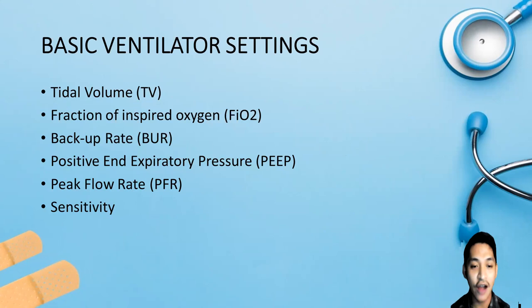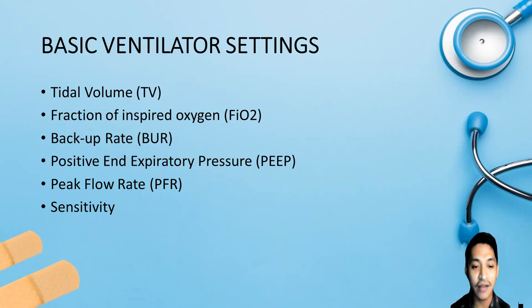The fraction of inspired oxygen, or FiO2, is the oxygen concentration delivered to the patient. ABG is usually determined before adjusting FiO2 levels. Room air is 21% and the highest possible FiO2 is 100%. Peak flow rate is the maximum flow delivered by the ventilator during inspiration; rates of 60 liters per minute may be sufficient, though higher rates are frequently necessary. The backup rate is the number of breaths given per minute. PEEP, or positive end expiratory pressure, is exerted during the expiration phase and improves oxygenation by enhancing gas exchange and preventing atelectasis.